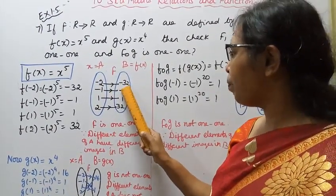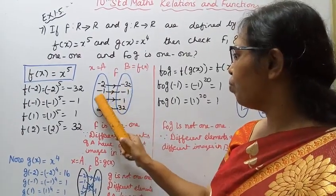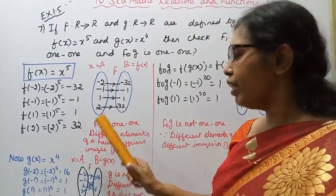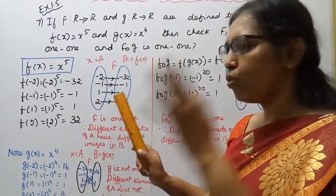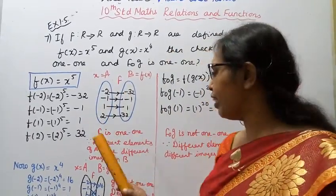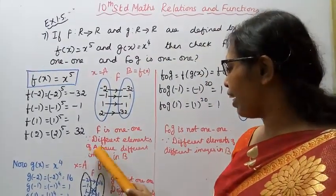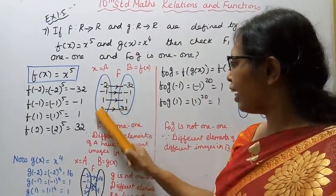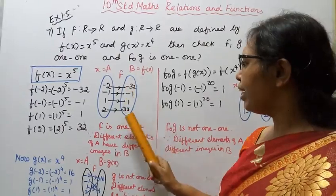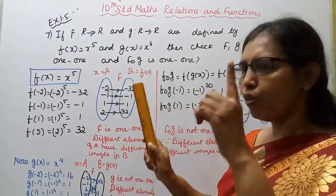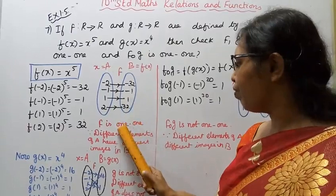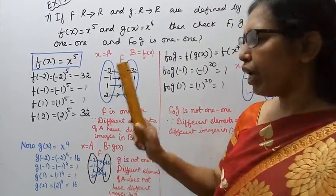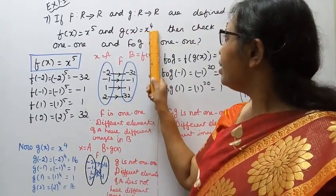Looking at this, the definition of 1-to-1 is: different elements of A have different images in B. If the elements are different, each element of B has one image. That means f is 1-to-1 — different elements of A have different images in B.